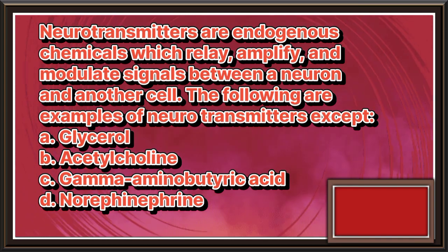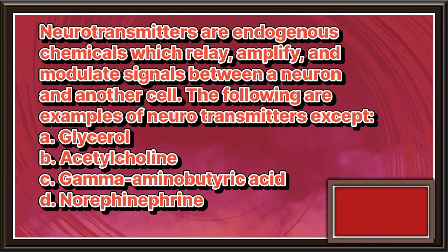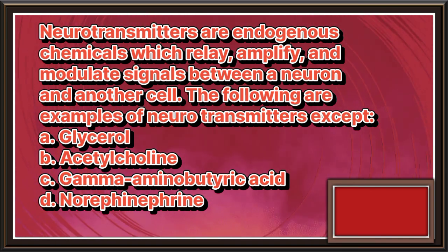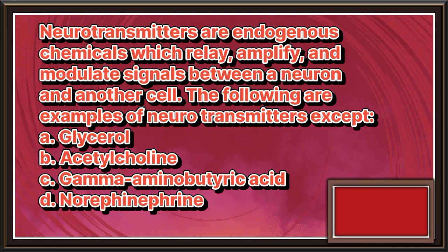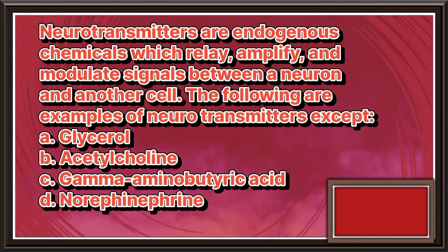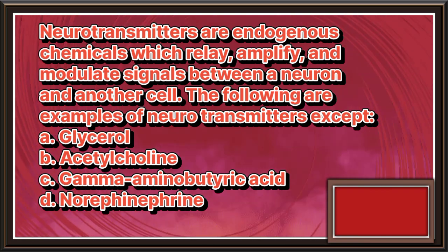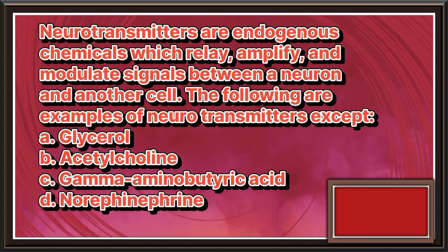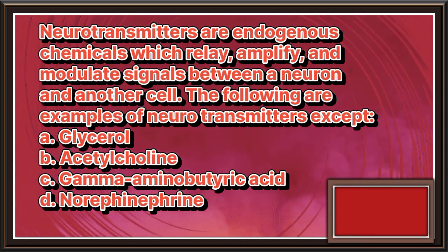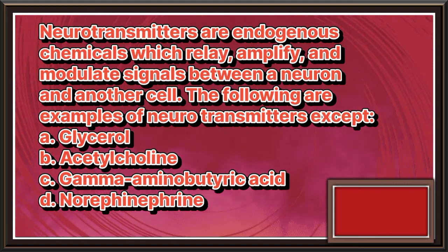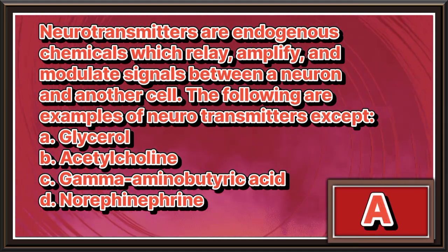Neurotransmitters are endogenous chemicals which relay, amplify, and modulate signals between a neuron and another cell. The following are examples of neurotransmitters, except. A. Glycerol. B. Acetylcholine. C. Gamma-aminobutyric acid. D. Norepinephrine. The answer is letter A.